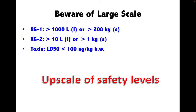Sometimes people misunderstand and think they only need to worry about the risk group classification. Think about it: if you handle a low-risk group in high volume, it is always considered higher risk. Risk group 1 materials exceeding 1,000 liters of liquid or 200 kilograms of solid are considered large scale. Likewise, risk group 2 materials exceeding 10 liters of liquid or 1 kilogram of solid are also considered large scale. Toxins with an LD50 of less than 100 mg/kg body weight are also considered large scale. Spatial safety procedures must be implemented in addition to small-scale requirements.